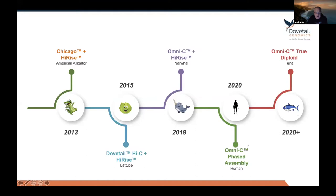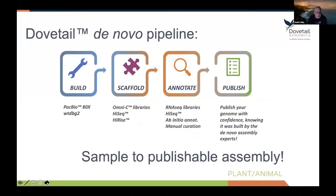This is the timeline for Dovetail. We started in 2013, coming out of a lab at UC Santa Cruz — Green's lab, which was working with the American alligator. He developed a protocol called Chicago, which is proximity ligation done in vitro versus in situ. Nick Putnam wrote the scaffolding software we use called HiRise, and we still use it today. In 2015, we came out with Dovetail Hi-C, an in situ version of Chicago — our chromosome-scale scaffolding technology.